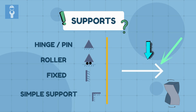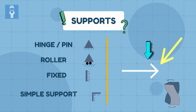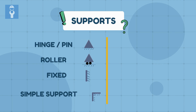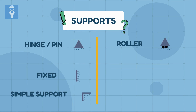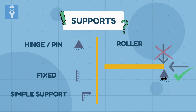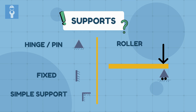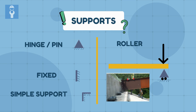Depending on the type of support and the member, these supports can provide restraints in various directions. They're also responsible for the necessary stiffness in a structural member. Let's now start our first type of support — roller support. Roller supports can only resist perpendicular forces but are free to move laterally. They allow for movement along surfaces without resistance to horizontal forces. Roller supports can be in the form of rubber bearings or gears.